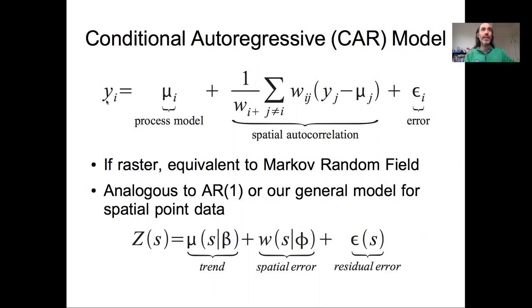We're going to say y at any location i is going to come first from what's predicted by our process model. So what our process model predicts at i, that could be anything from just a mean to a complex nonlinear model. So put any process model in here we want. And again, in this context often we are trying to build realistic process models to describe what we think explains y.